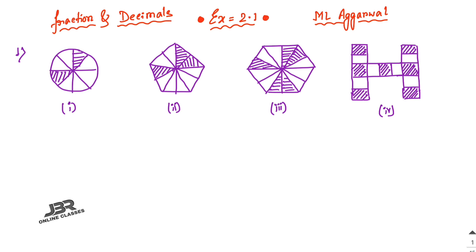The first problem asks you to find the fraction from these figures. The first one is a circle divided into 8 parts total. Out of 8 parts, 2 parts are shaded. So the fraction is 2 by 8, which simplifies to 1 by 4. So 1 by 4 is your answer.